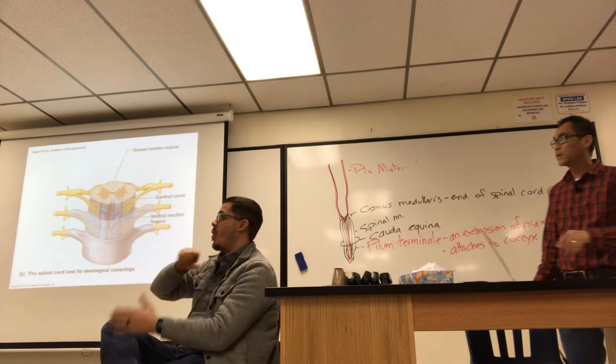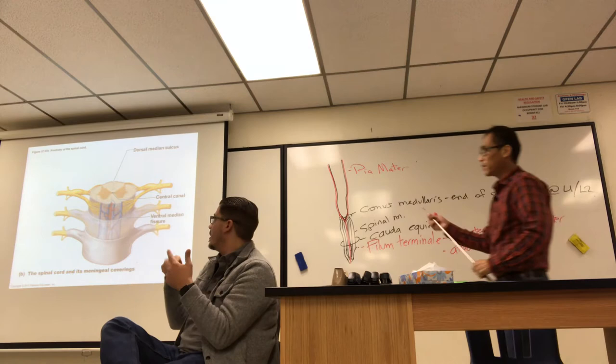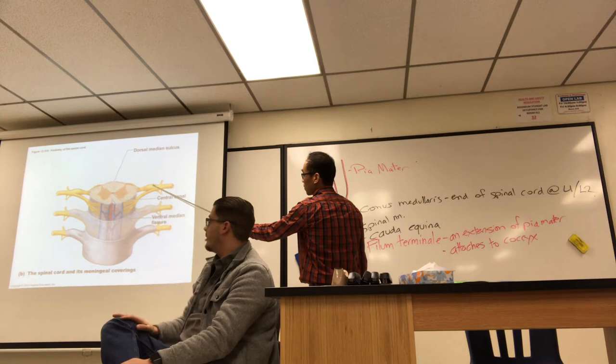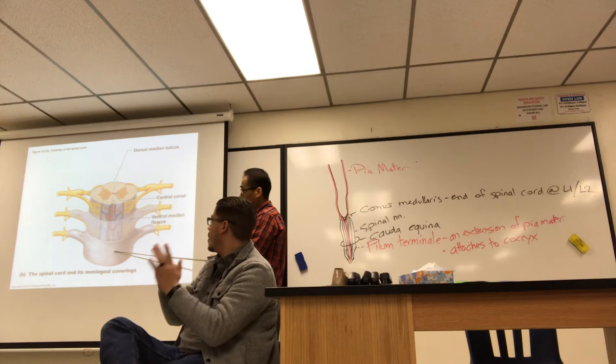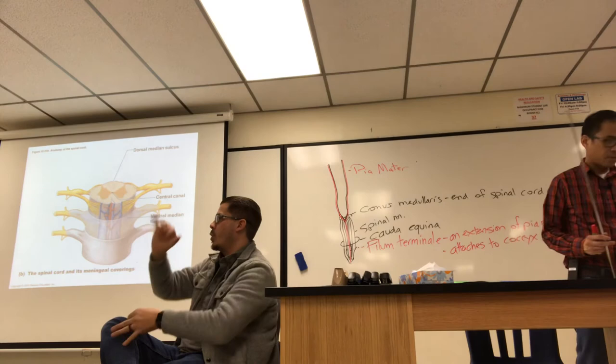This picture from the Marriott textbook shows three spinal cord segments — identifiable by the three pairs of spinal nerves coming off. At each segment the meninges are peeled away, showing the dura mater, the arachnoid mater, and the pia mater. Those meningeal layers cover the spinal cord as well.